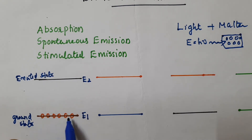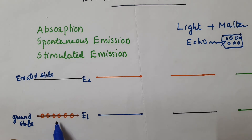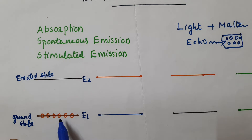Normally, all the atoms are in the ground state because the ground state is the state having minimum energy.